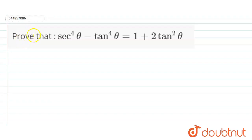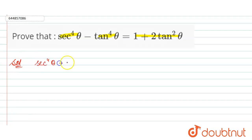Hello everyone. Here the question is: prove that sec raised to power 4 theta minus tan raised to power 4 theta is equal to 1 plus 2 tan squared theta.